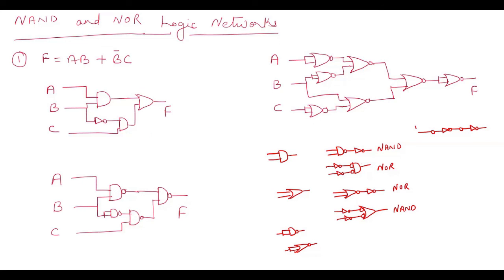For the lower AND gate converted to NOR: the inverter introduced at the back cancels with another inverter, so they cancel each other and only the bubble remains. For the OR gate at the output, a bubble is placed at the output, making it a NOR gate, and an inverter is added. The single inverter that remains is implemented as a NOR gate. This gives the final structure using only NOR gates.